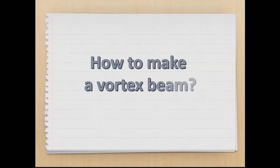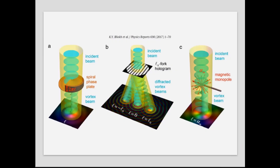So, how to make a vortex beam? The strange thing about matter is that, along with its particle nature, it also has a wave nature. This means that it is possible to make vortex beams by simply modulating the wave function of a particle. To do that, scientists use particular devices called phase plates.